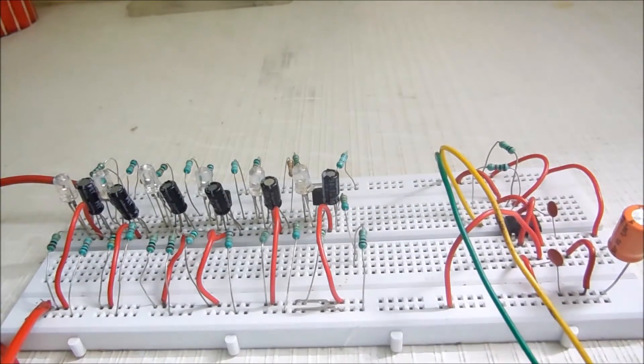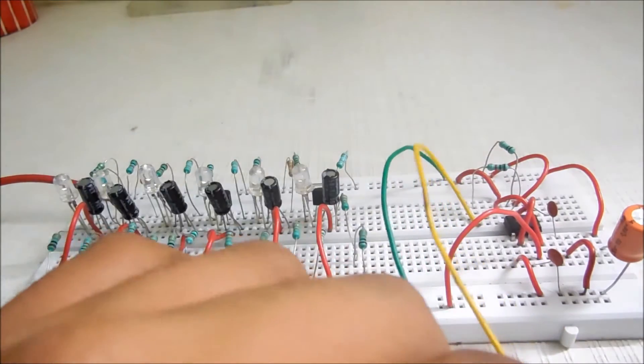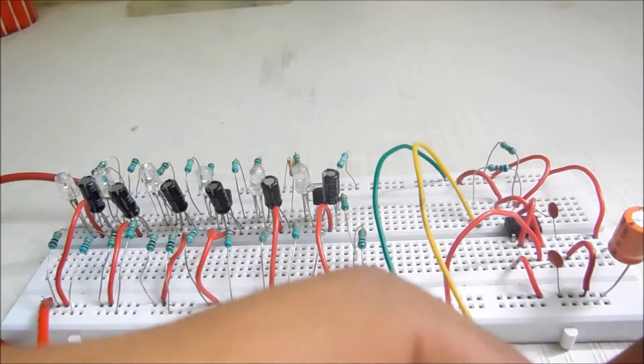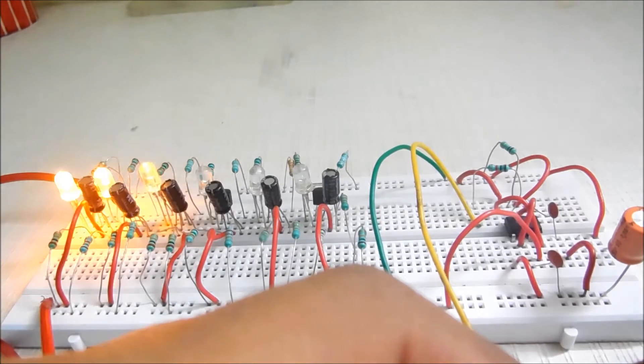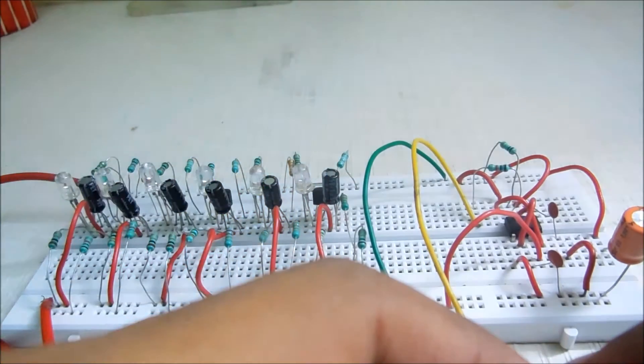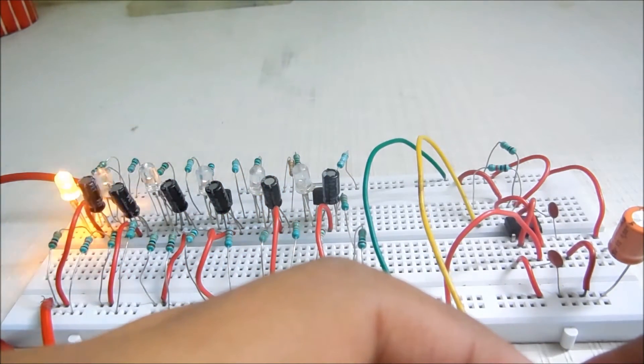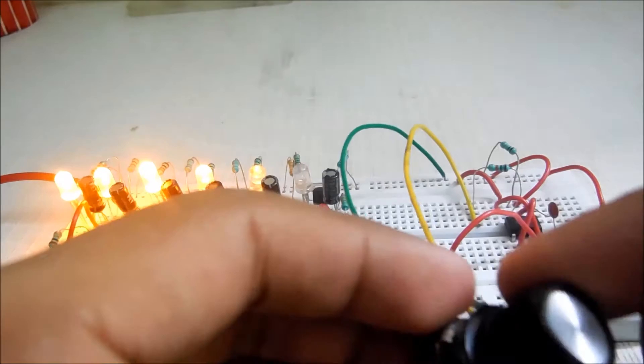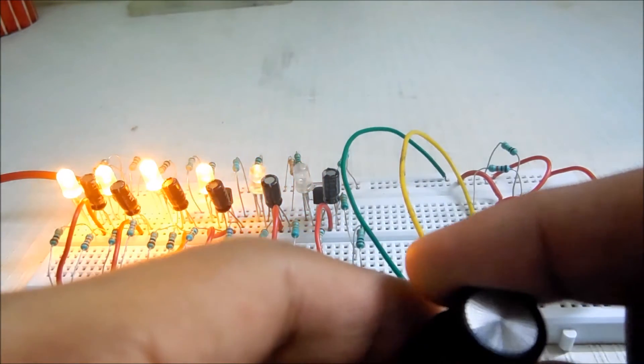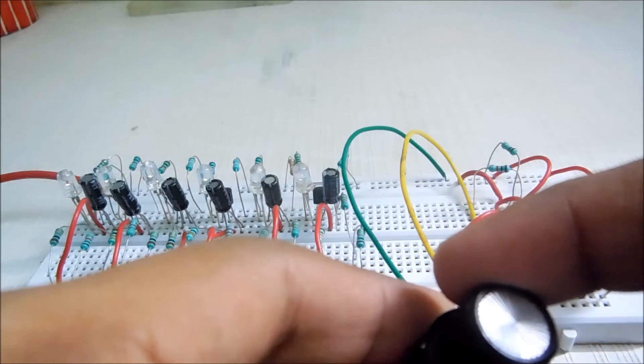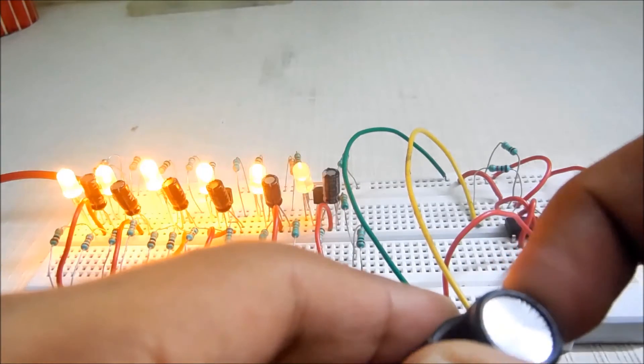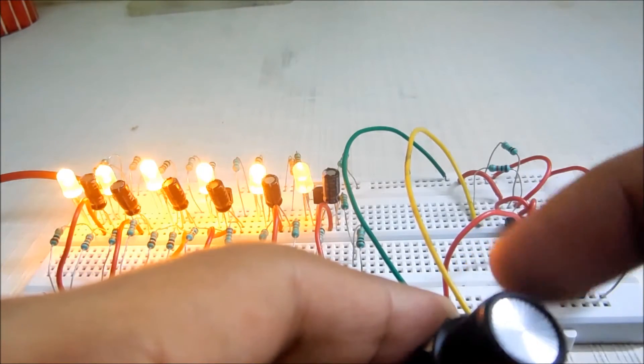So this is the circuit which I was talking about and all its connections. As we increase the potentiometer resistance, more LEDs are illuminated. I will increase it slowly. I am increasing the potentiometer resistance.